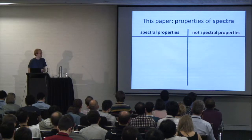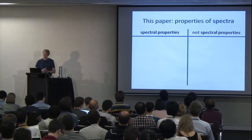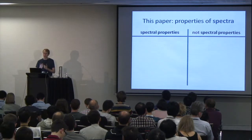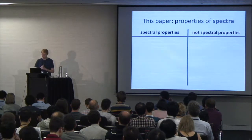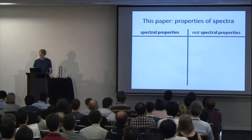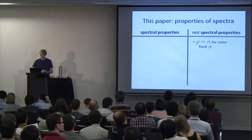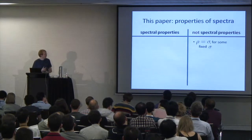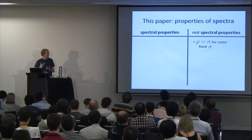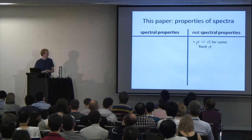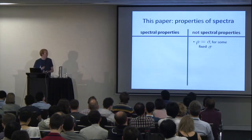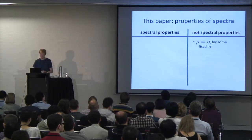Our paper is titled Quantum Spectrum Testing, meaning the properties we look at of our mixed states will only depend on the spectrum — the eigenvalues of the mixed state. Let me give a list of interesting properties to consider. The most basic one is testing whether the unknown rho equals a given sigma. Whether you have a prediction of what rho is — testing whether it actually matches that prediction — is not a property of the spectrum, because this depends both on the eigenvalues and the eigenvectors, not just the eigenvalues.